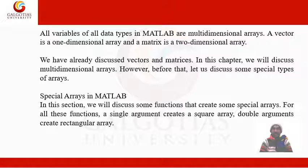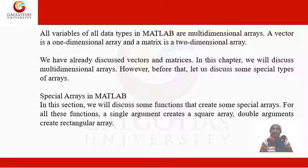A collection of vectors together is called a matrix, but a matrix cannot be a vector. A vector is a one-dimensional array and a matrix is a two-dimensional array. We have already discussed vectors and matrices, so here we will see about multi-dimensional arrays.